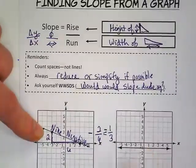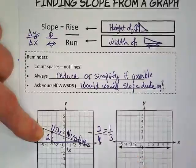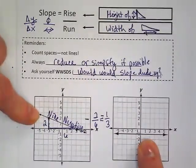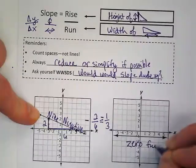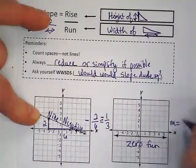I want you to try that with these others. Well, we can do it real quick. Look at this. What would slope dude say? He would say zero. It's zero fun. That means the slope here or the M is equal to zero.